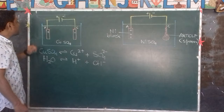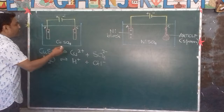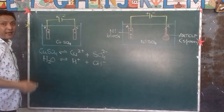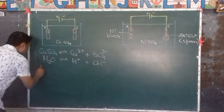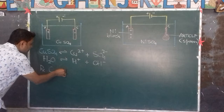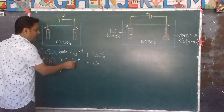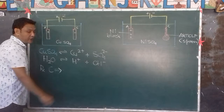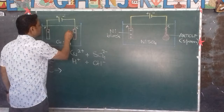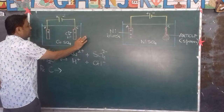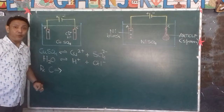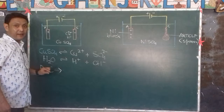As electricity passes through, reactions take place at the cathode and the anode. At the cathode, the positive ions or cations are attracted towards it. So both copper ions Cu²⁺ and hydrogen ions H⁺ migrate towards the cathode.